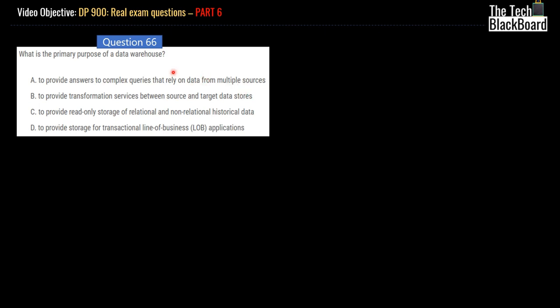So if you look at the concept of data warehouse, you will understand that this might be properties of data warehouse. It does provide transformation or read-only storage. However, B, C, or D, none of these are the primary purpose of data warehouse. The primary purpose of a data warehouse is to collect data, store data from different sources, and provide you capabilities to query data, to analyze data, and take better business decisions. That's the primary purpose of data warehouse. With this knowledge, I can tell you the correct answer for this one is option A, which is to provide answers to complex queries that rely on data from multiple sources.